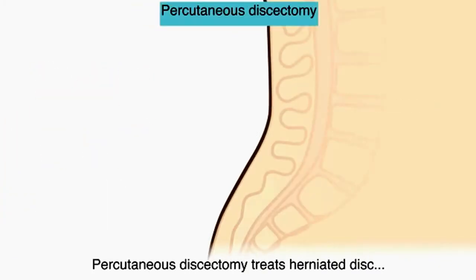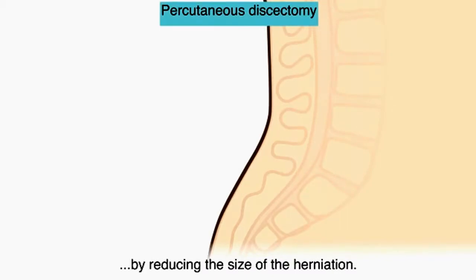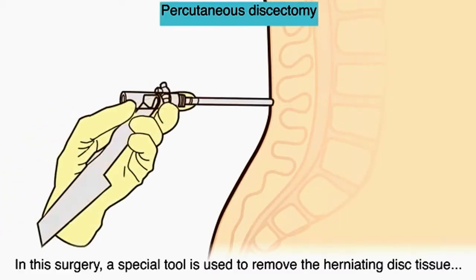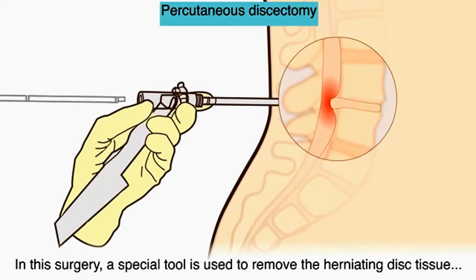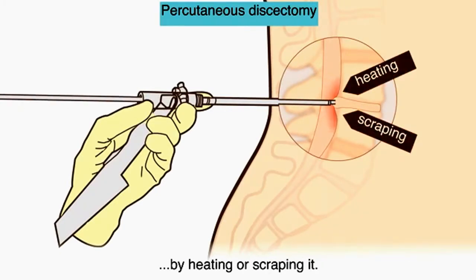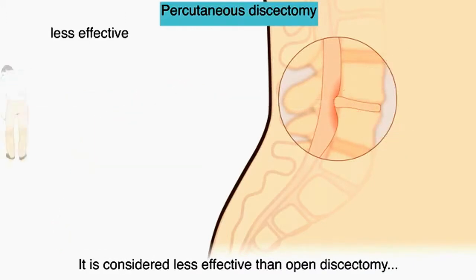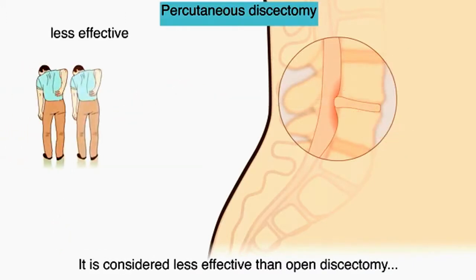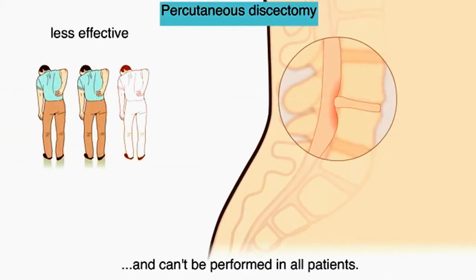Percutaneous discectomy treats a herniated disc by reducing the size of the herniation. A special tool is used to remove the herniating disc tissue by heating or scraping it. It is considered less effective than open discectomy and can't be performed in all patients.